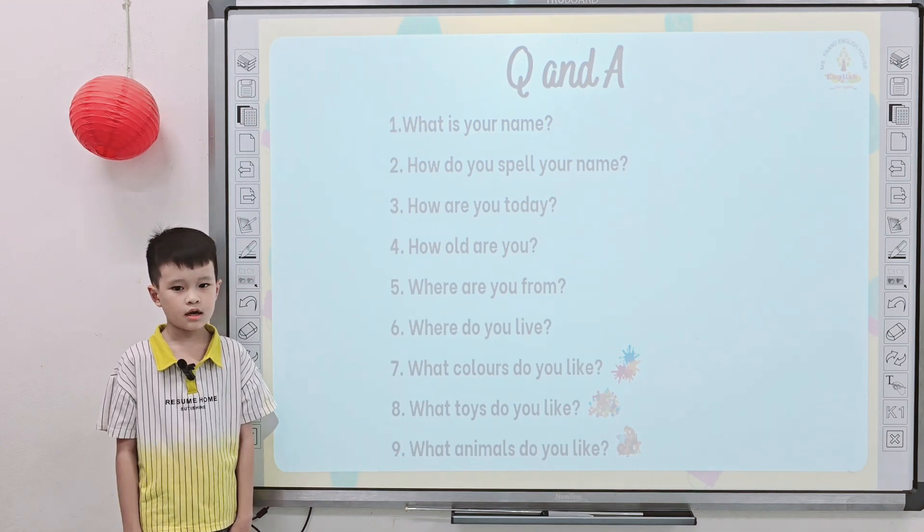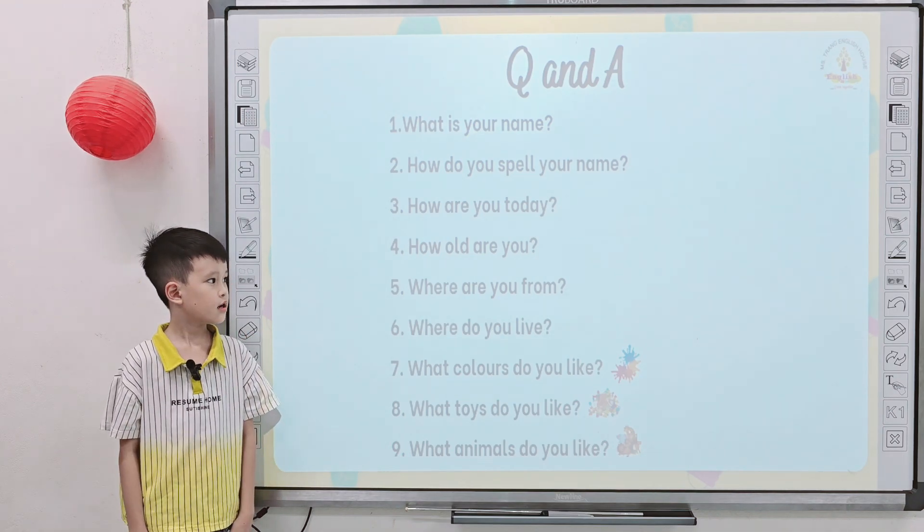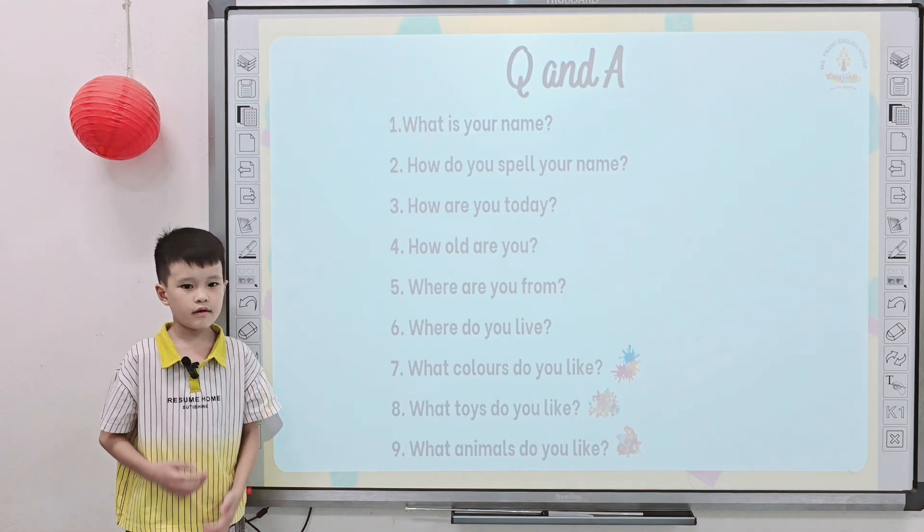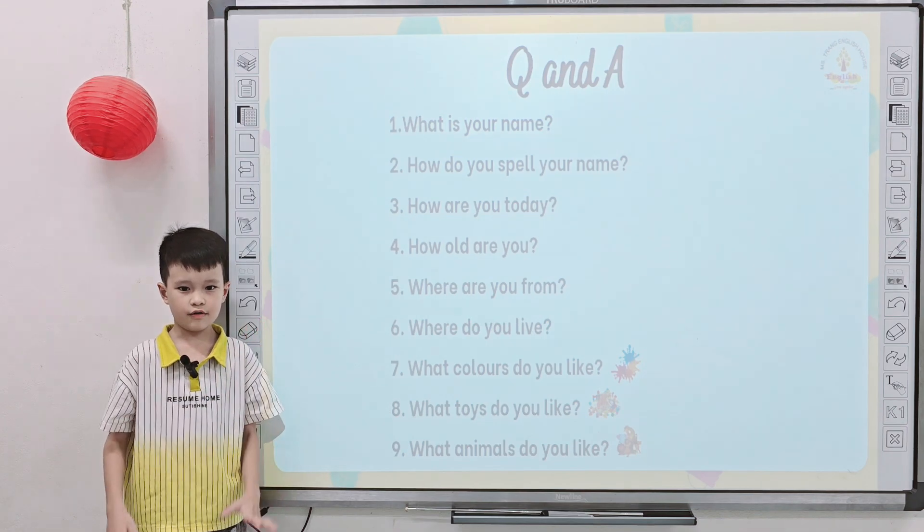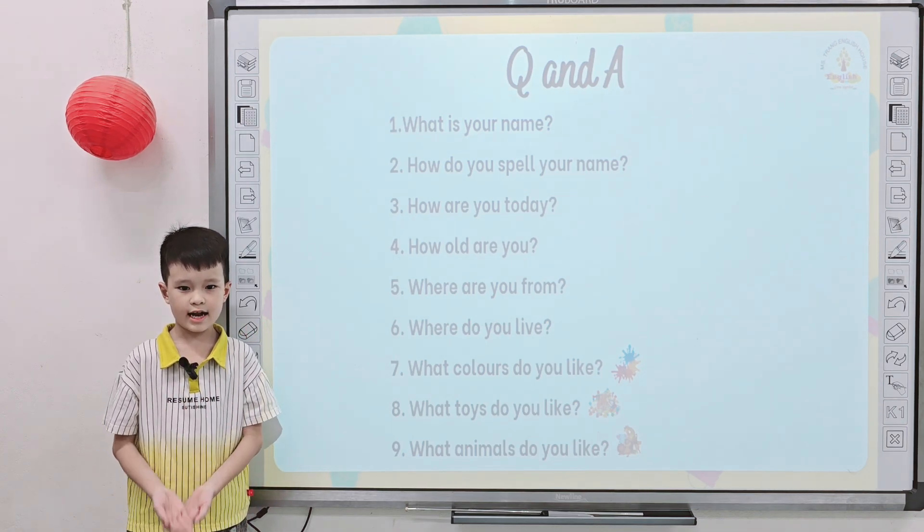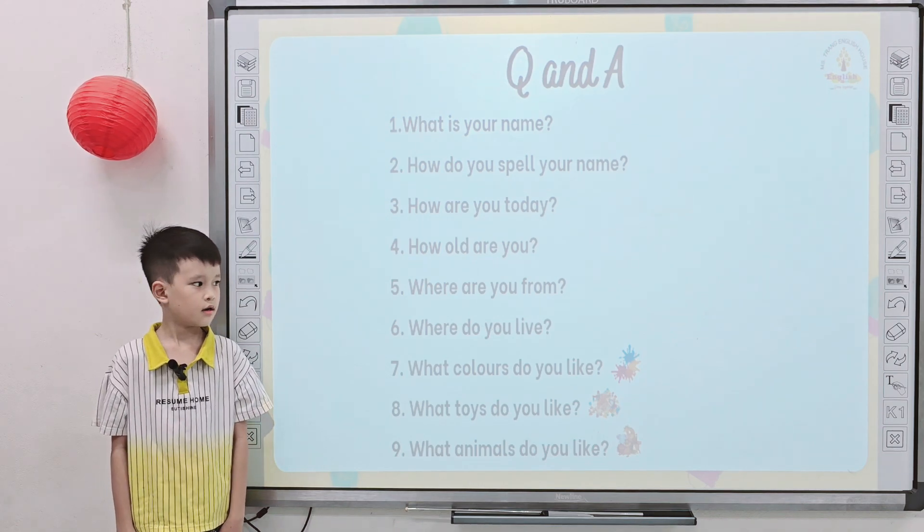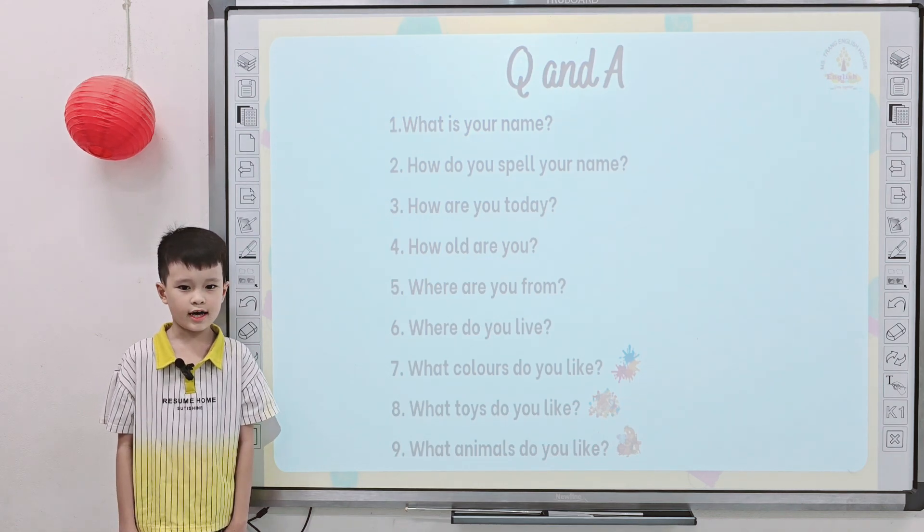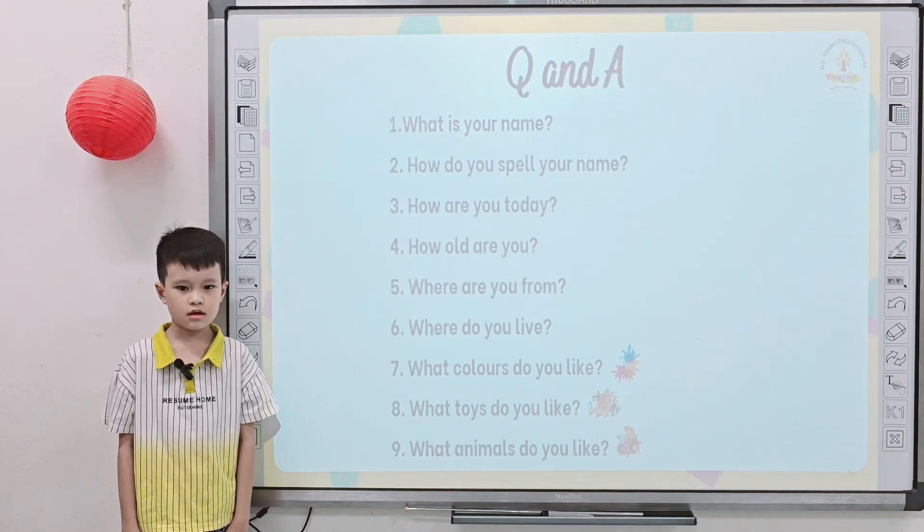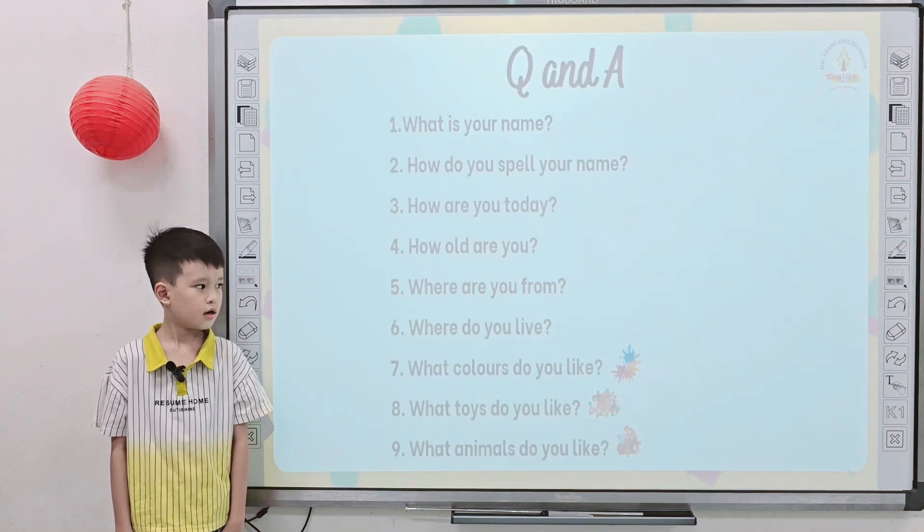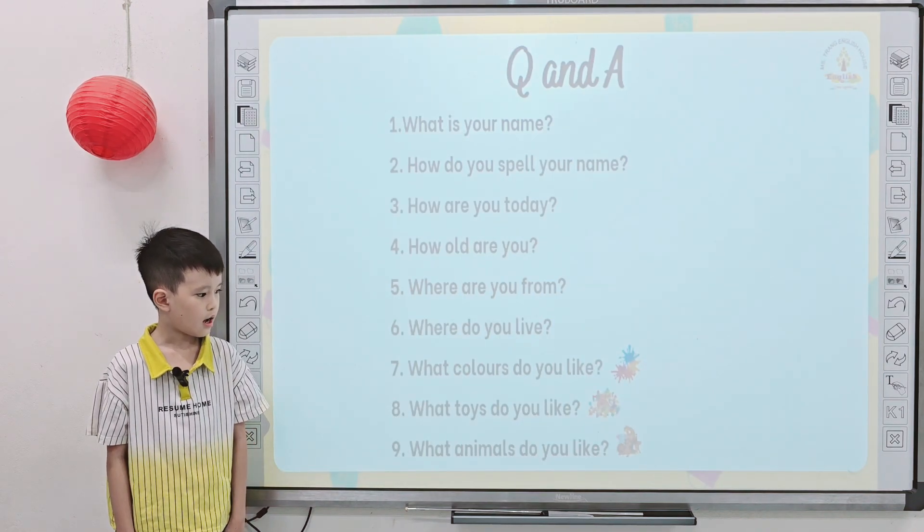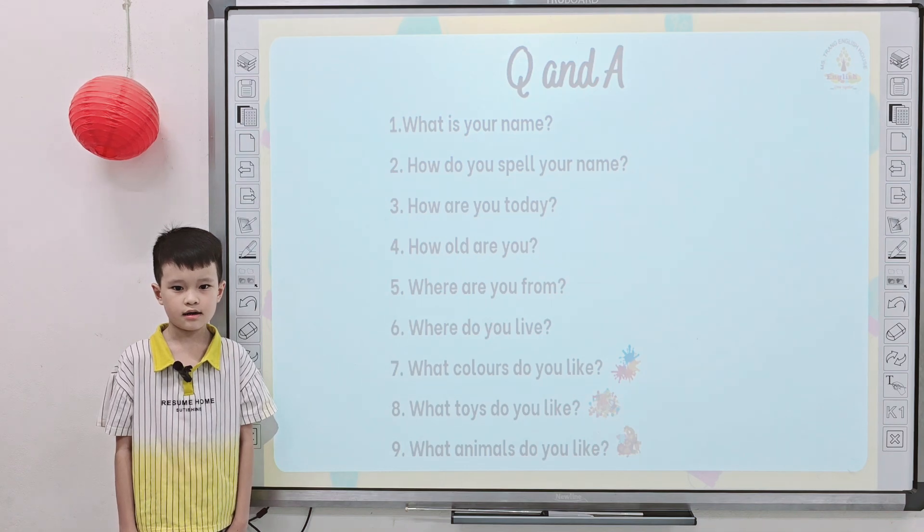How are you today? I'm happy. How old are you? I'm Israel. Where are you from? I'm from Vietnam. Where do you live? I live in Jungian. Tell me what colors you like? I like red. And what toys do you like? I like pie. And tell me what animals you like? I like tiger. Very good.